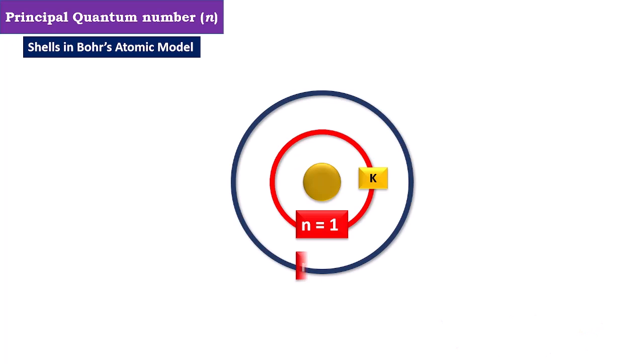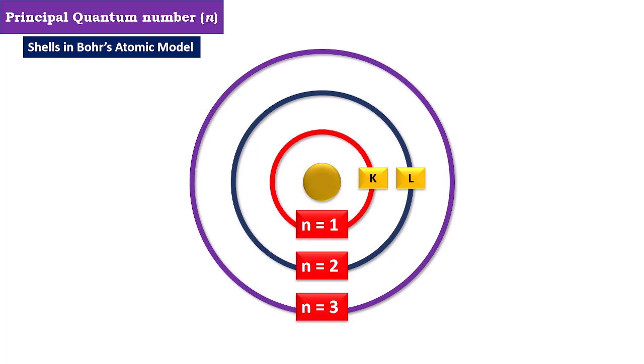The second shell, having principal quantum number 2, we call the L shell. Next, having principal quantum number value 3, we call the M shell.